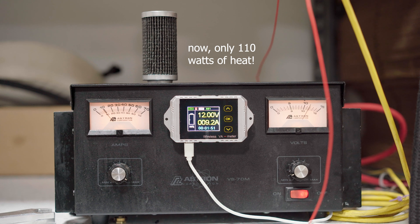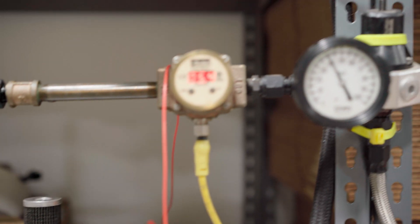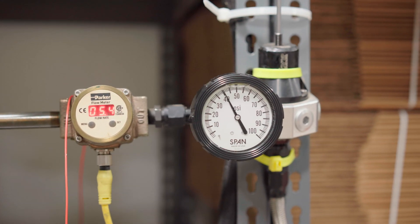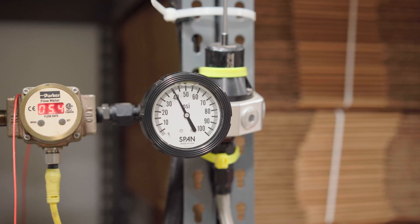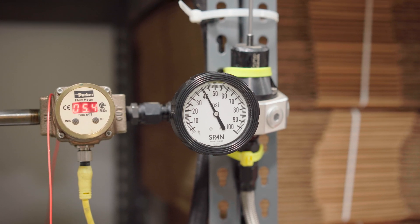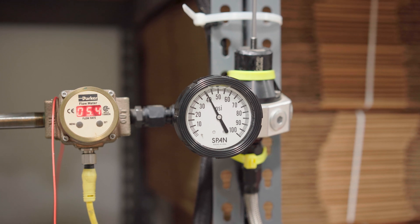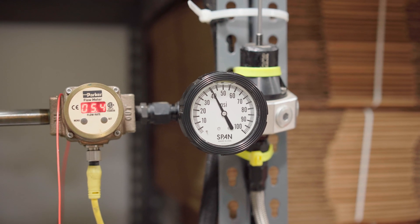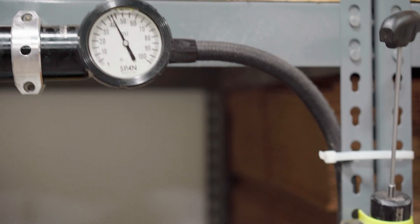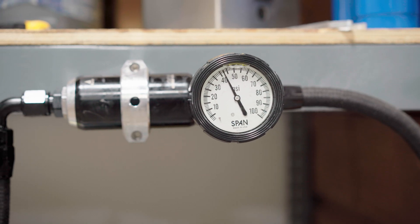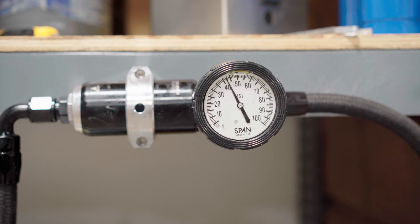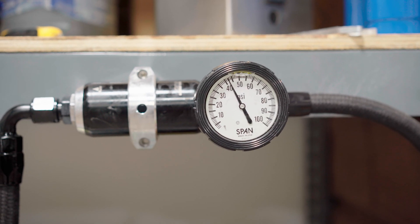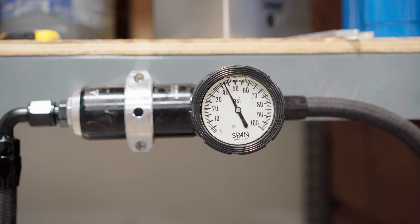Now when this filter gets obstructed again, the regulator setting is not going to change. You don't see it, but what's going to happen as the filter becomes obstructed is this pressure before the filter—in other words, what the pump sees—is going to keep getting higher and higher.